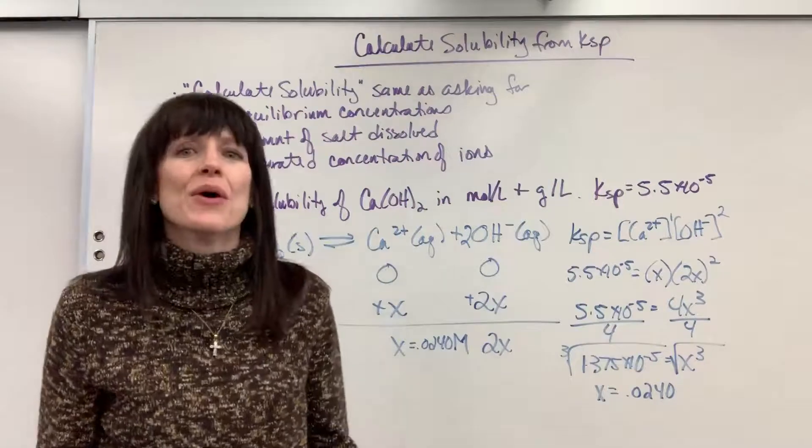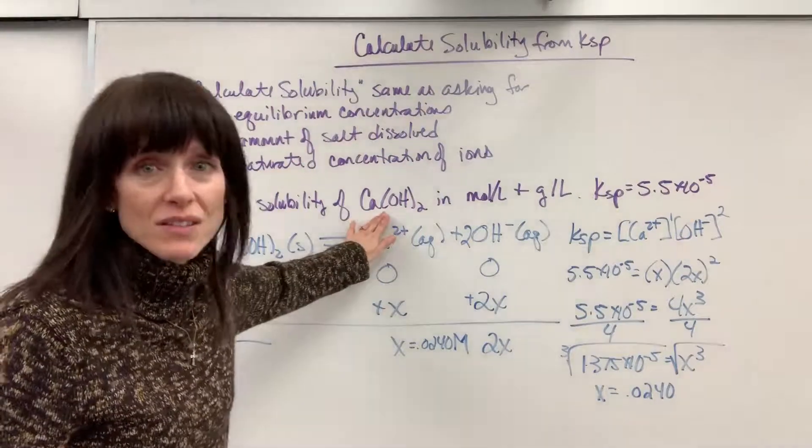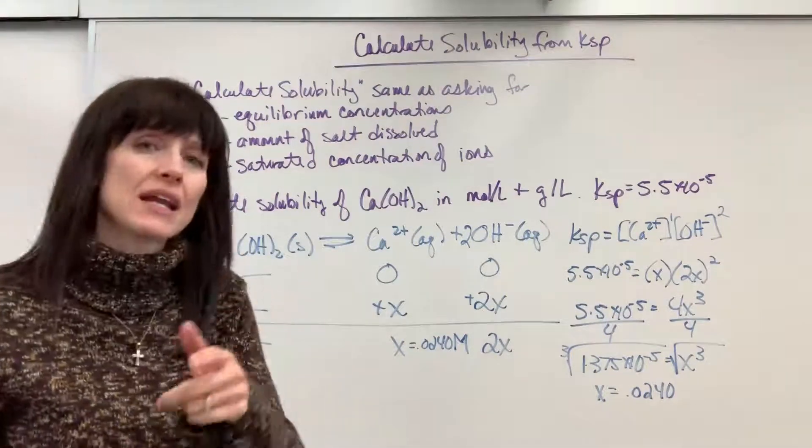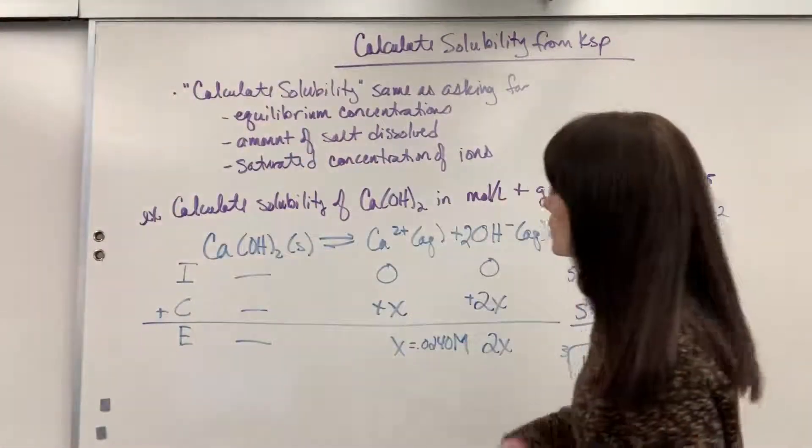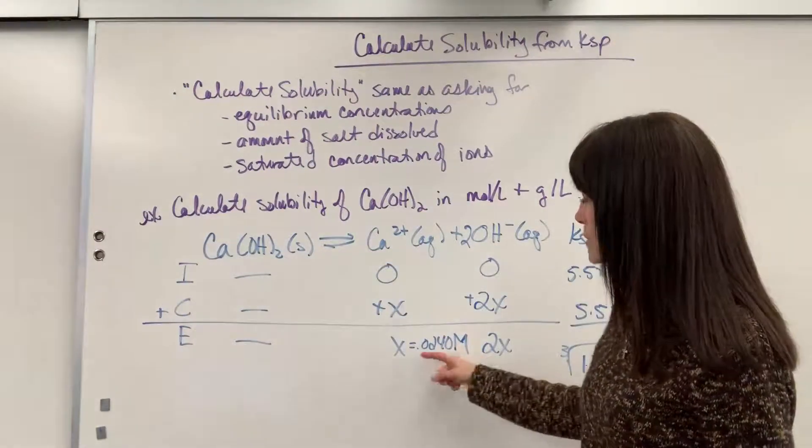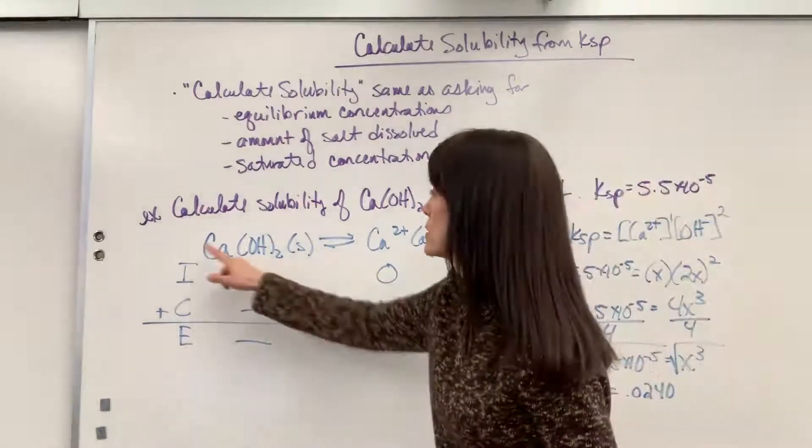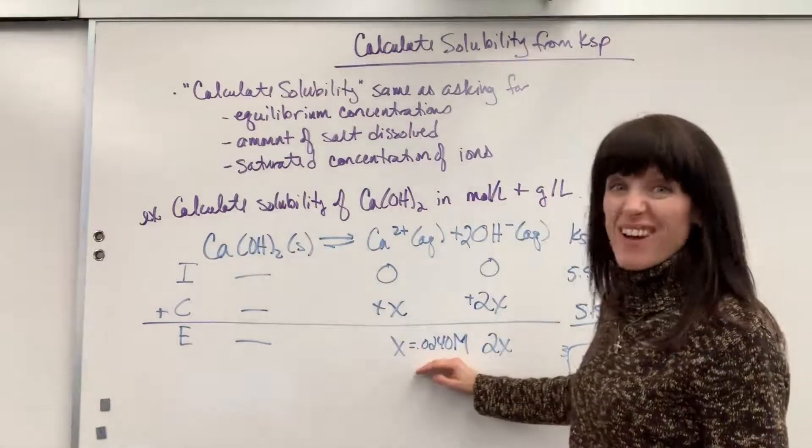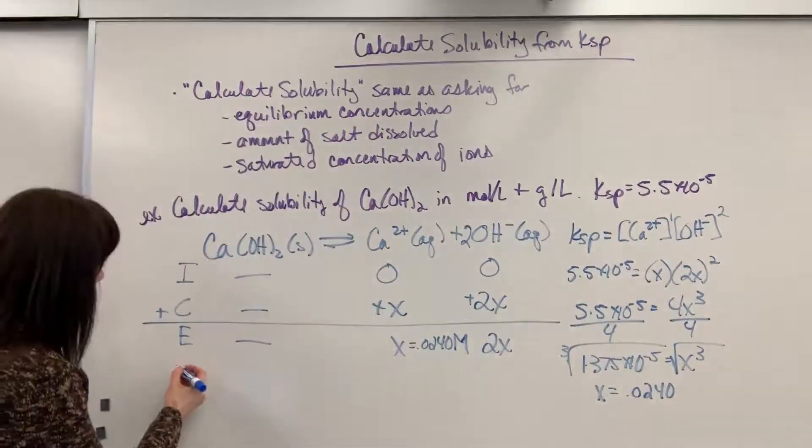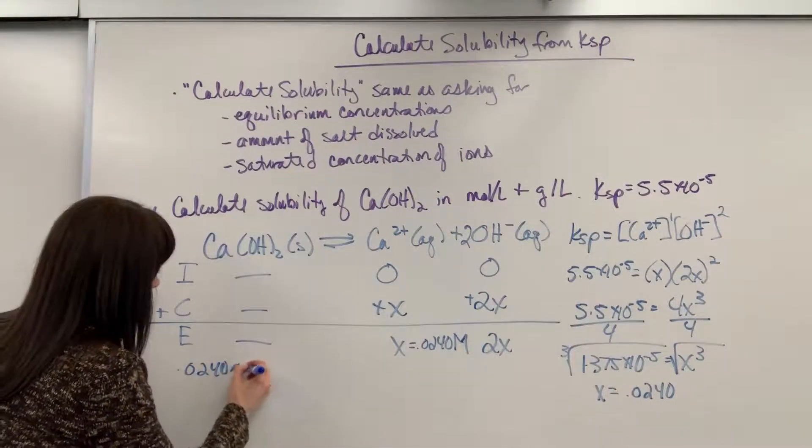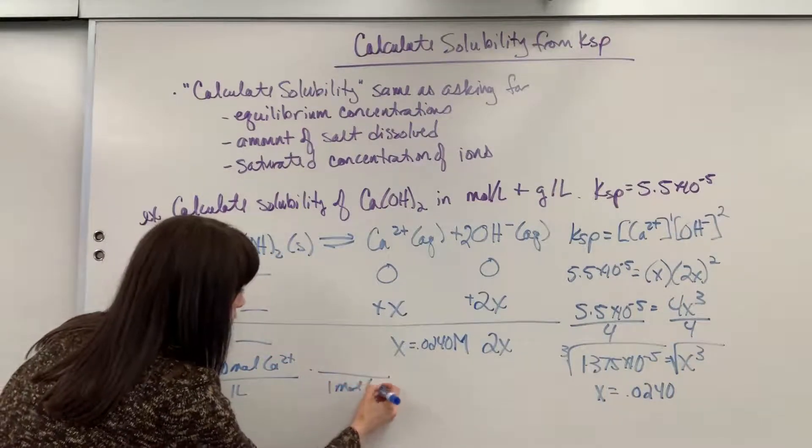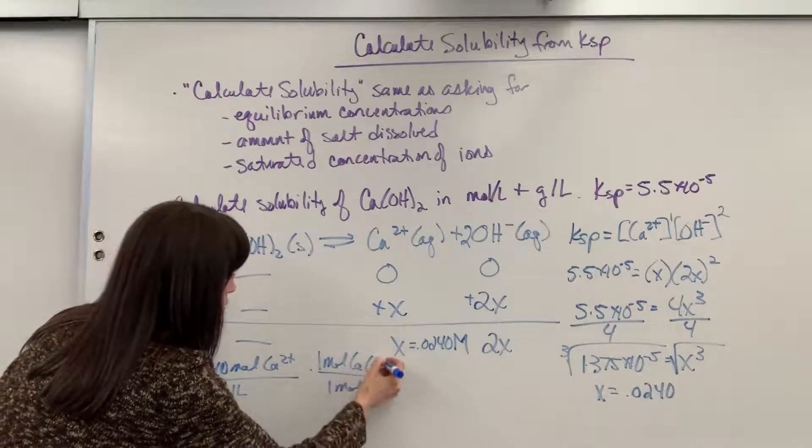Now let's come back. What was the question? It wants to know the solubility of the salt, of the solid. So we've got to do just a little bit of stoichiometry. I'm going to talk it out and also write it out to prove it to you. So notice here, one mole of calcium hydroxide produces one mole of calcium. So if I produce 0.0240 molar, because this is a 1 to 1 molar ratio, that means that's also the molarity of the calcium hydroxide.